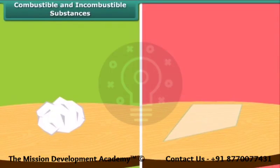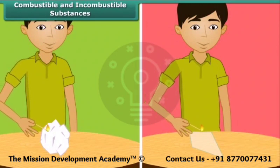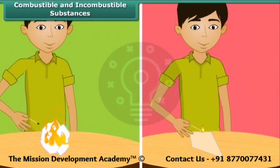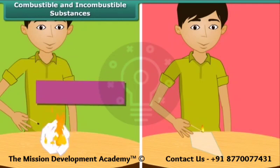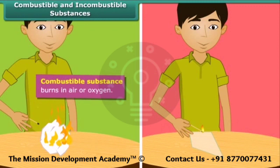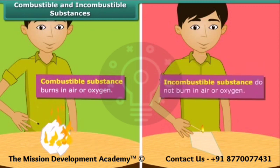There are two types of substances. Some substances catch fire and burn, while the other group does not catch fire. The boy is bringing a lighted matchstick close to the paper and glass. Paper catches fire and so it is called a combustible substance. Glass does not burn, and such substances which cannot burn in air or oxygen are called incombustible substances.